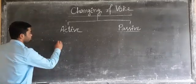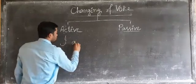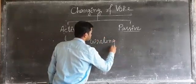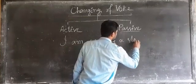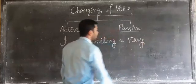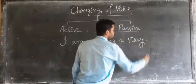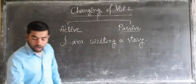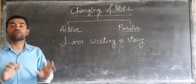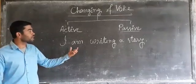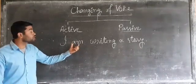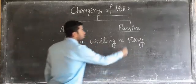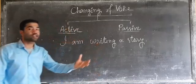We are taking one example: 'I am writing a story.' This sentence is given. Now you are told to change the voice. To change the voice, first you should know in which category this sentence is included — whether it is active voice or passive voice — only then you can convert it.